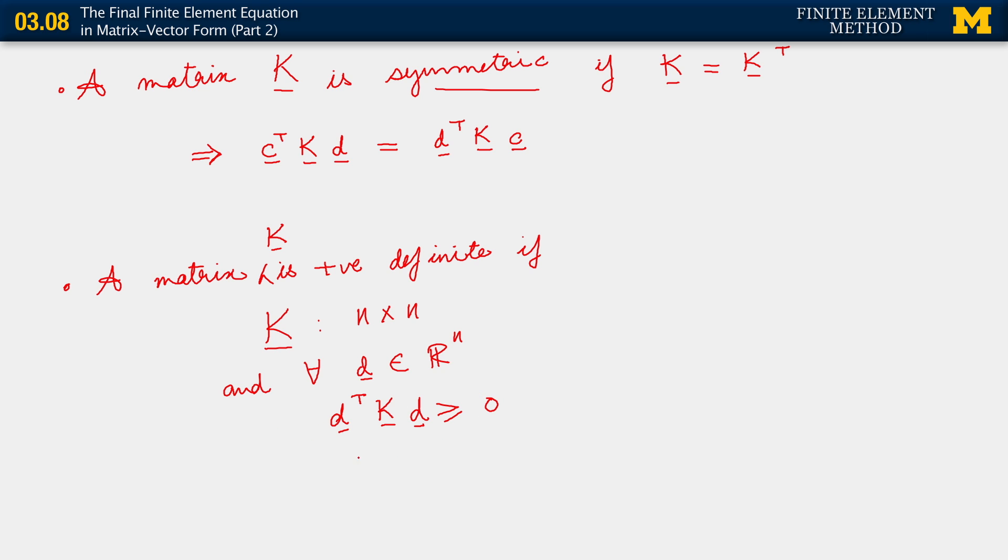In particular, D transpose KD is greater than 0 if the vector D is not itself the 0 vector. The 0 vector is simply a vector with 0 in every single entry.